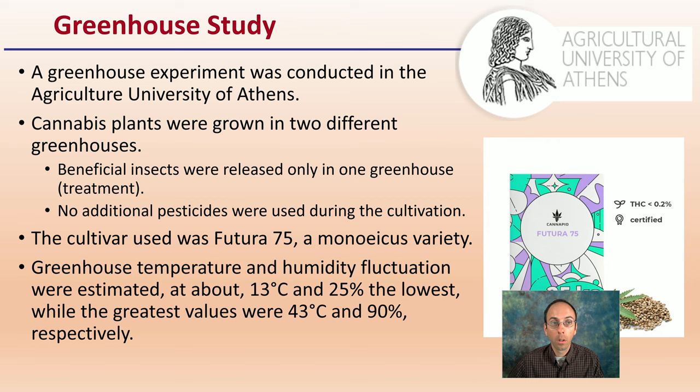This greenhouse study was conducted at the Agricultural University of Athens. They looked at two different greenhouses — one that had the beneficial insects and one that basically did not. This is the minuses variety they were using, as well as the general greenhouse environmental conditions that those plants and insects were experiencing.